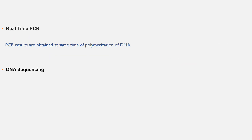In both PCR methods discussed, we first perform the PCR reaction and then identify PCR products. However, in case of real-time PCR, results are obtained at the same time as polymerization of DNA. With each PCR cycle, a tracer or fluorescent molecule is released, and when fluorescence reaches beyond a threshold point, it is considered a positive reaction. This method takes less time, so it can be used in the case of deceased donor transplants.